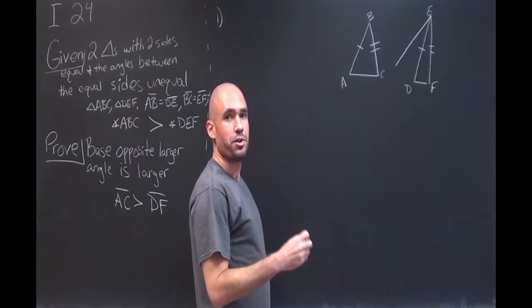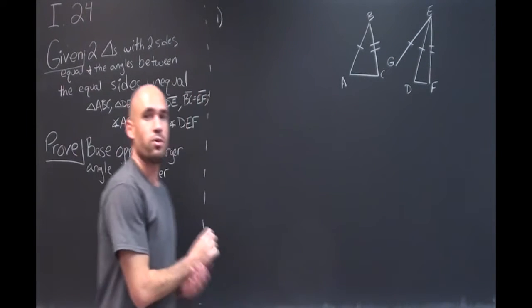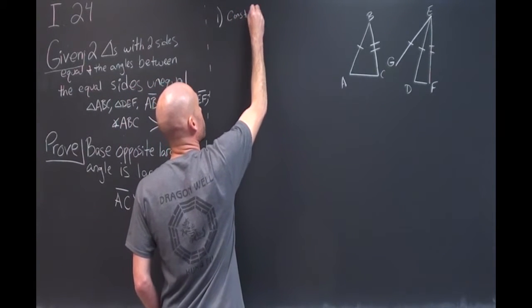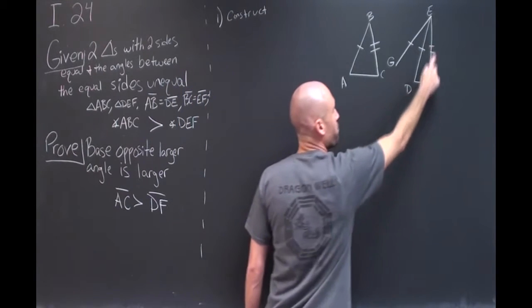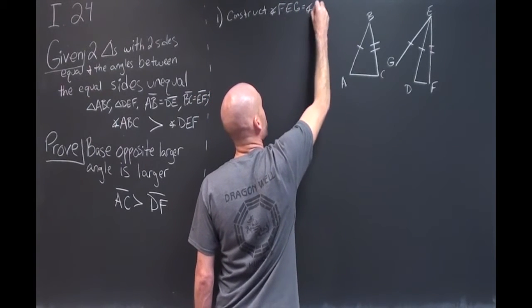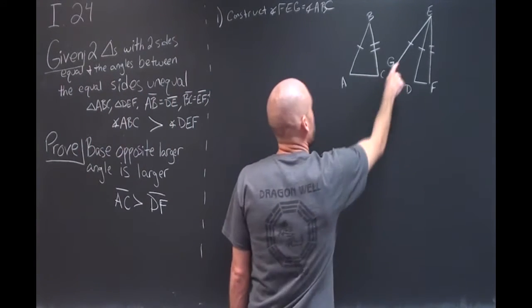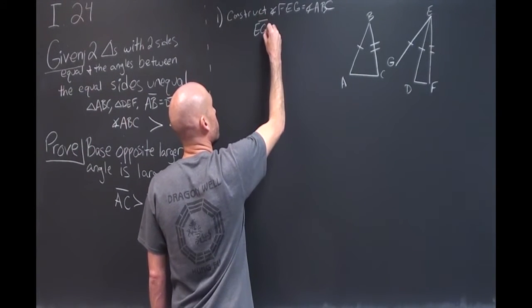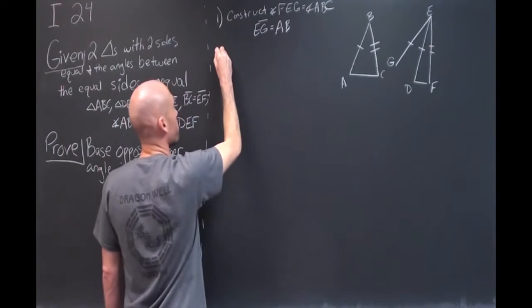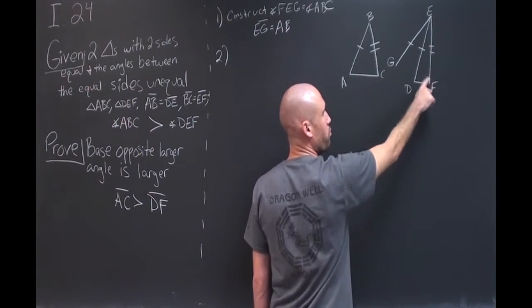And at the same time while we're doing this we're going to construct EG such that it's equal to the side AB. So construct angle FEG equal to angle ABC and then EG equal to AB. Then from here we're going to connect this floating point G to points F and D.